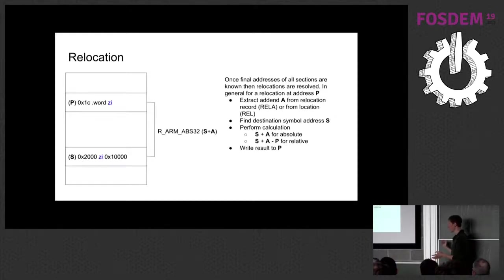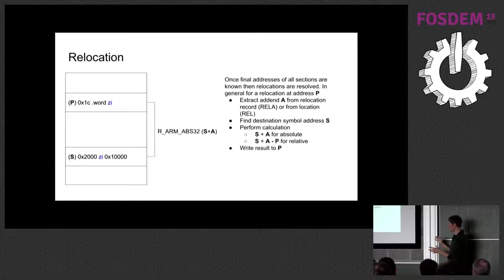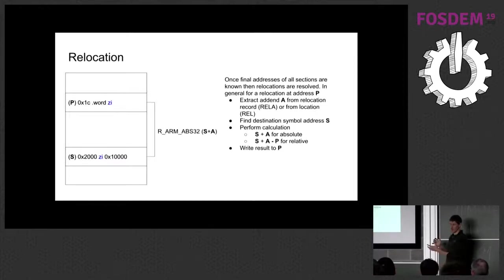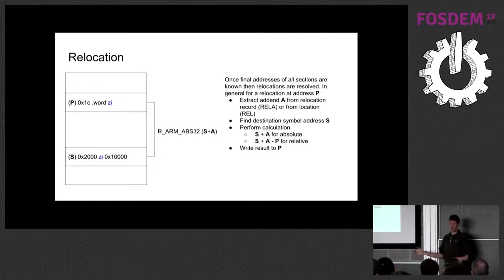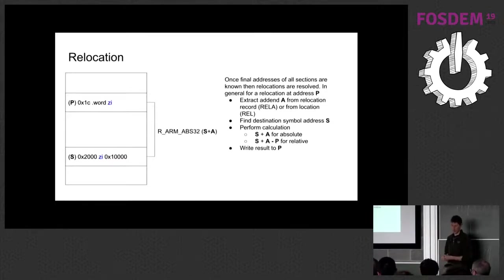For relocation, a particular calculation gives you a symbol to look up, finds its address, and gives you an addend. It tells the linker to do either an absolute or a relative calculation. An absolute relocation just puts the value of the symbol in there — if you're getting the address of a global variable and you're not doing position-independent code, the linker can splat the address directly into that location. If you're doing position-independent code, it has to add various offsets.